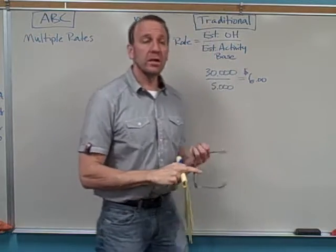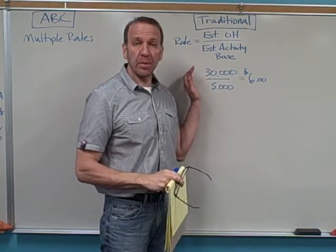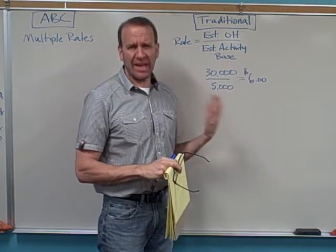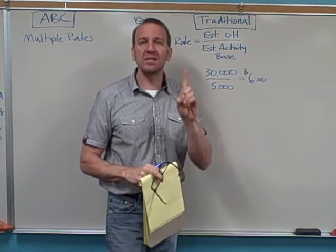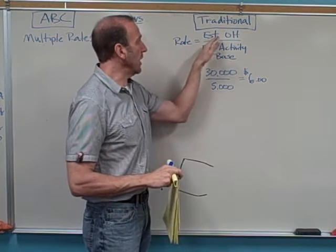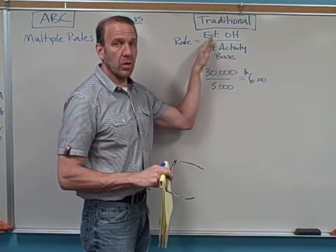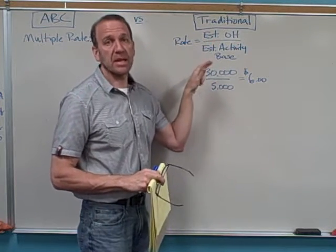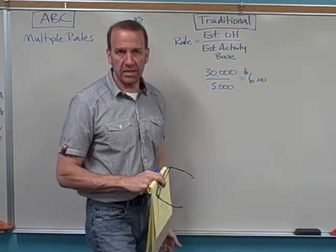In our previous video, we looked at calculating a predetermined overhead rate. This was the traditional approach, or the plant-wide approach, where we get one single rate. So to get this predetermined overhead rate, we took our estimated overhead, we estimated what our overhead would be for the year or the time period, and divided it by the estimated activity base, activity for that same time period.